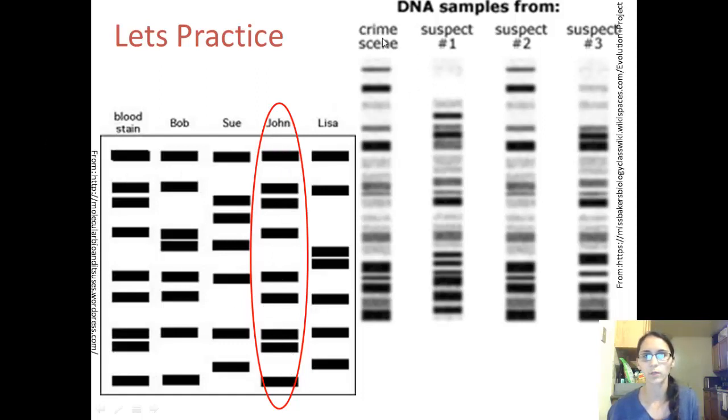This next one is another example. This is DNA found at a crime scene, and these are three suspects. Which suspect's DNA was found at the crime scene? Suspect number two's DNA is similar to this DNA that is found at the crime scene. You can tell that it's different from these other two suspects.